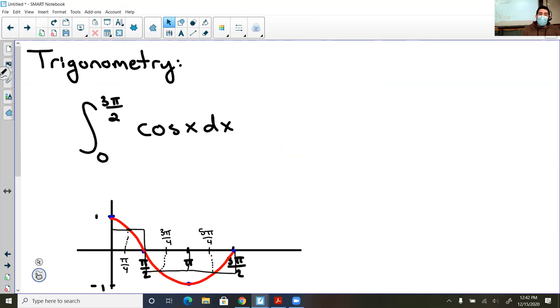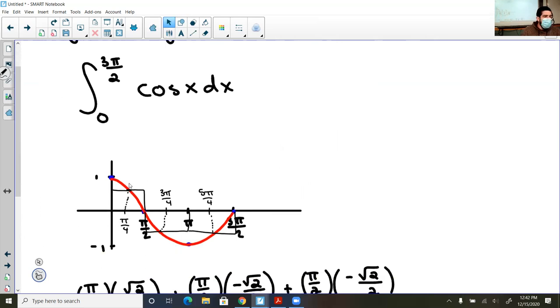My next example is dealing with trigonometry because I wanted some positive and some negative areas in there to give you an example. So I chose the integral of cosine of x from 0 to 3 pi over 2. Now I sketched my curve and I chose to do three rectangles and those three rectangles are all going to be MRAMs.